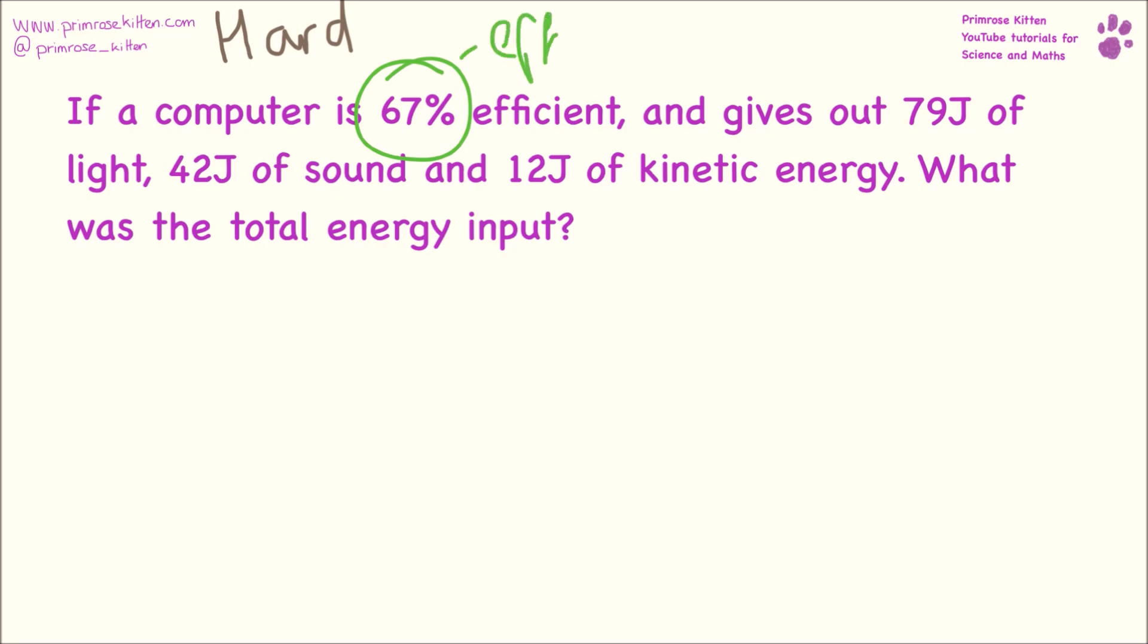A computer gives out 79 joules of light, which is useful. 42J of sound, that's useful. And 12J of kinetic, that's also useful because we need the fan going around to cool it down, since it produces a lot of heat energy, which is wasted.